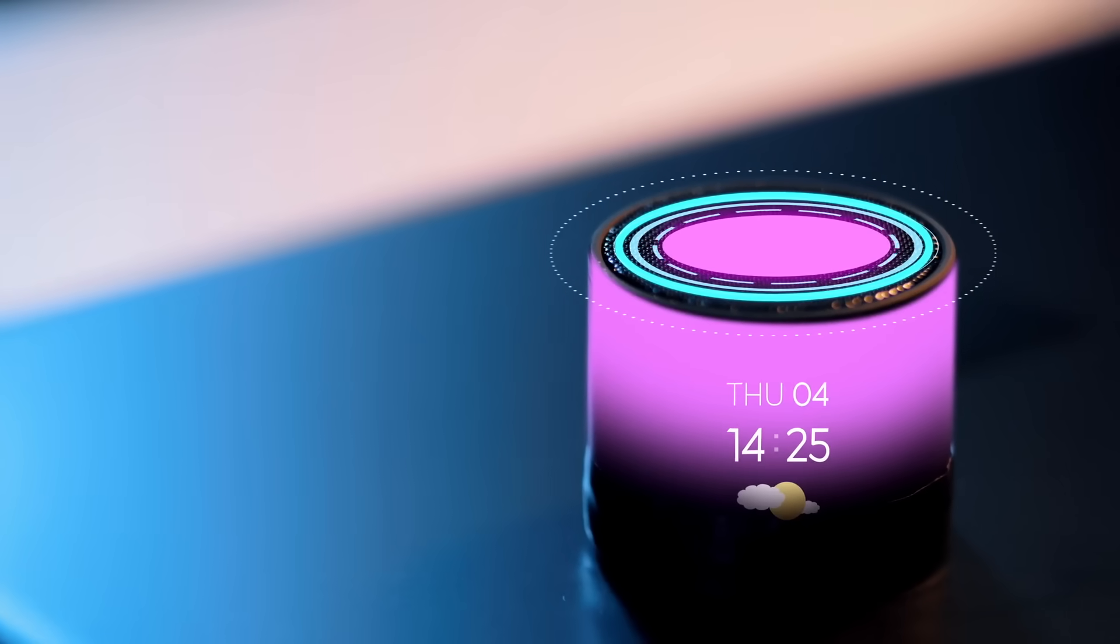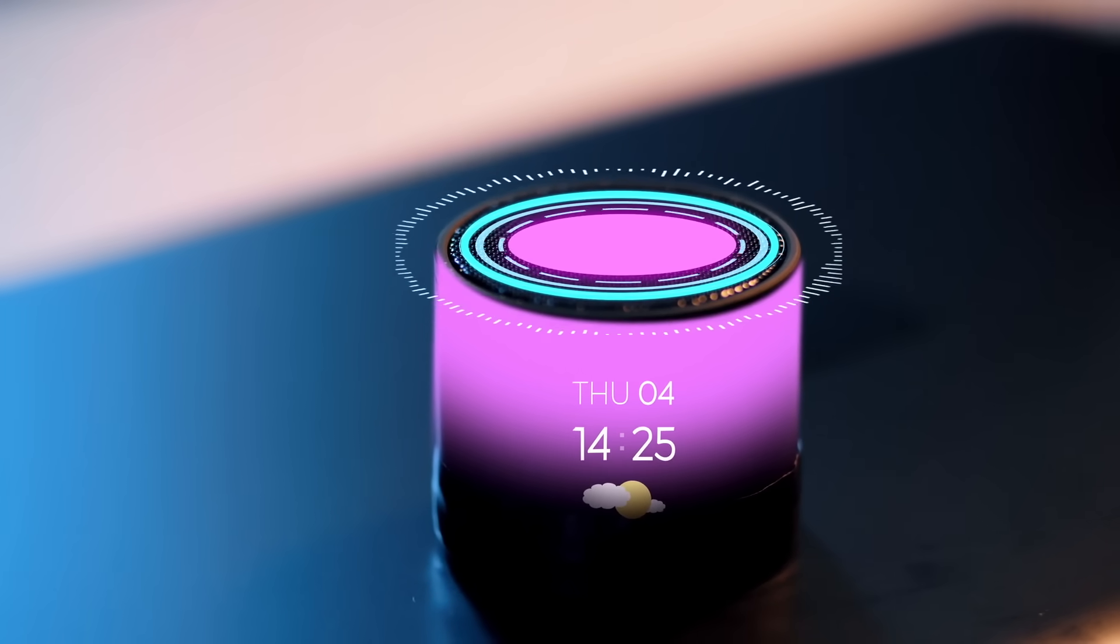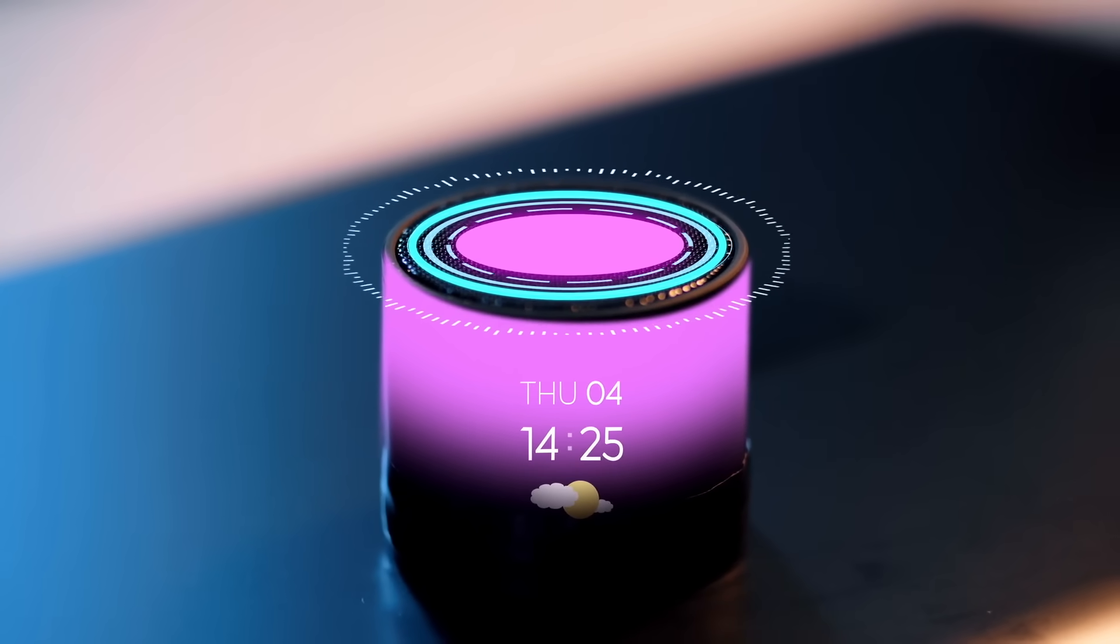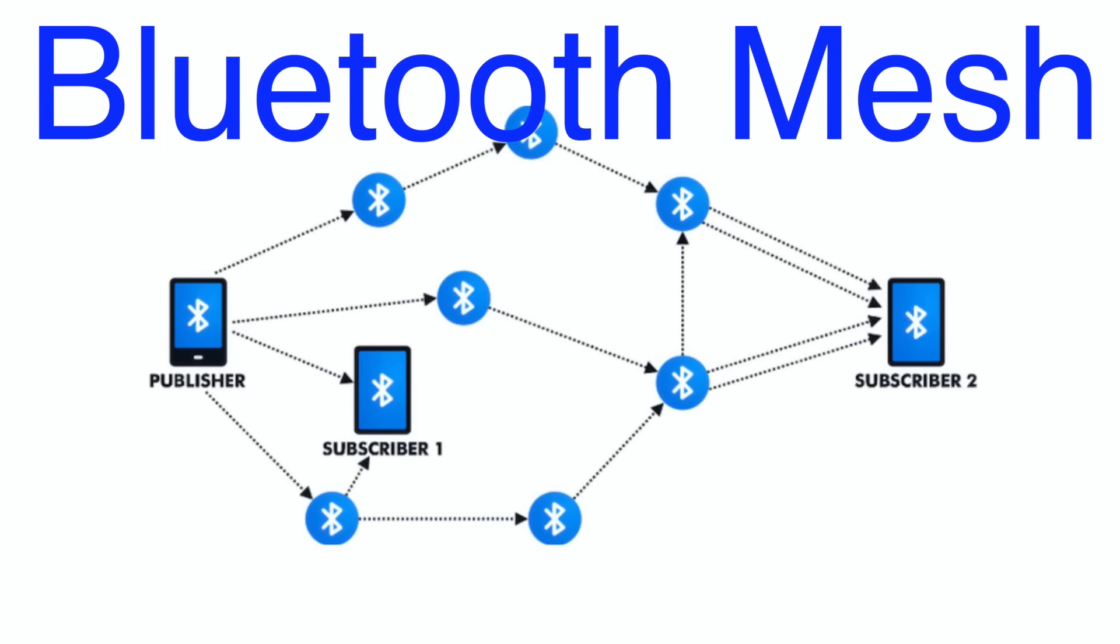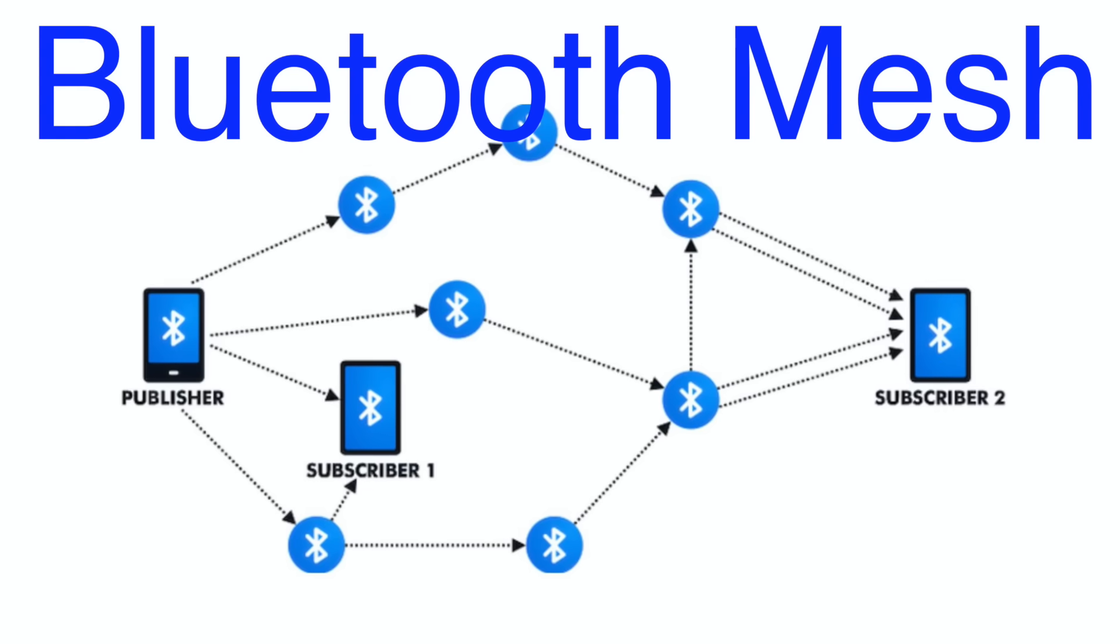You might associate Bluetooth with personal gadgets, but it's also stepping into the world of smart homes and virtual applications. Enter Bluetooth Mesh, a feature that allows multiple devices to form a network, much like a spider web.